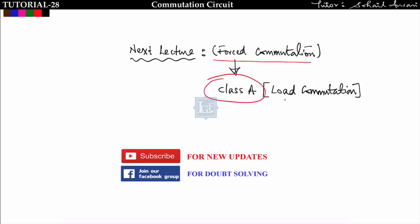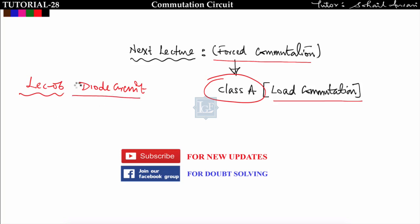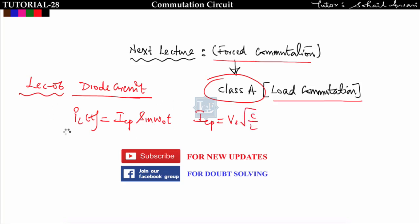In the next lecture we will start forced commutation, beginning with Class A commutation — the load commutation. Before studying forced commutation, you should go through lecture number 6, parts A and B, on diode circuits, because those concepts will be used in forced commutation. There I derived the inductor current i_L(t) = I_CP sin(ω_0 t), where I_CP = V_S √(C/L). This is the discharging LC circuit, and ω_0 = 1/√(LC). I will use this equation in forced commutation without re-deriving it.